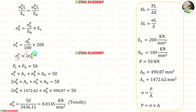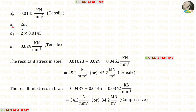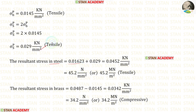Applying the stress values, substituting areas and the relation sigma_sp equals 2 × sigma_bp, we solve for sigma_bp and sigma_sp due to the tensile load — both tensile. For the resultant stresses in steel: both the thermal stress and load-induced stress are tensile, so we add them. For brass: the thermal stress is compressive and the load-induced stress is tensile, so we subtract. The final resultant stress in brass is compressive.